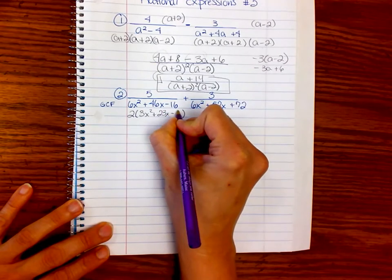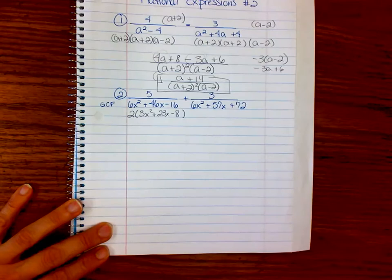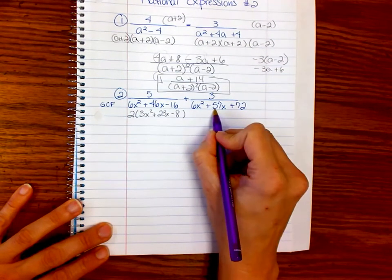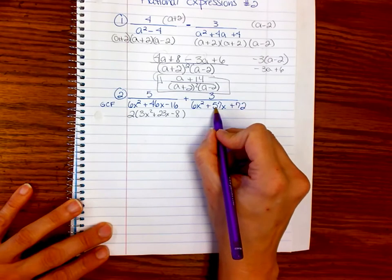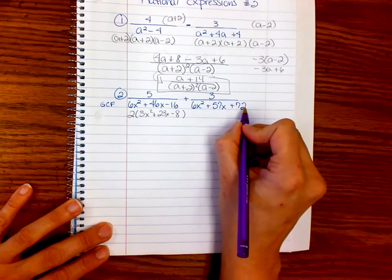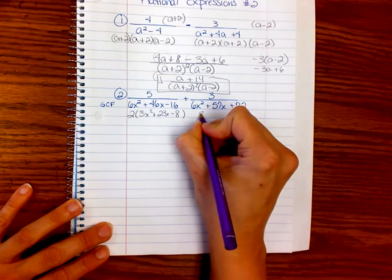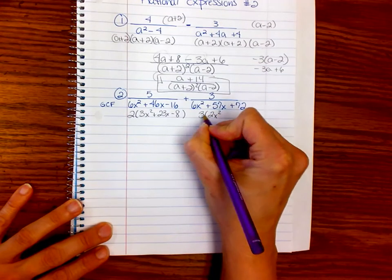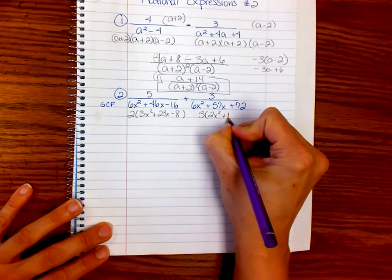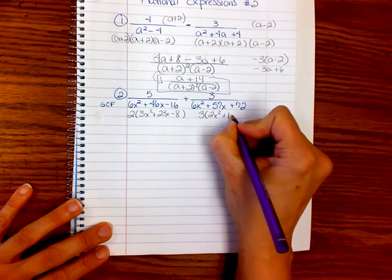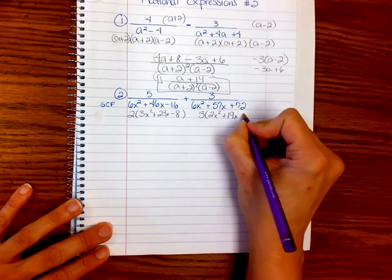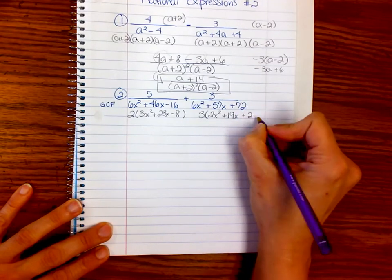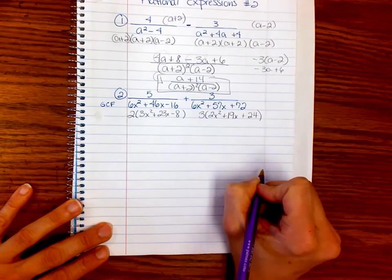Let's see if we can get that greatest common factor out. When we take a 2 out, we're dividing everything by 2. We get 3x squared plus 23x minus 8. And over here, the greatest common factor is 3. When we factor out 3, we get 2x squared plus 19x plus 24.